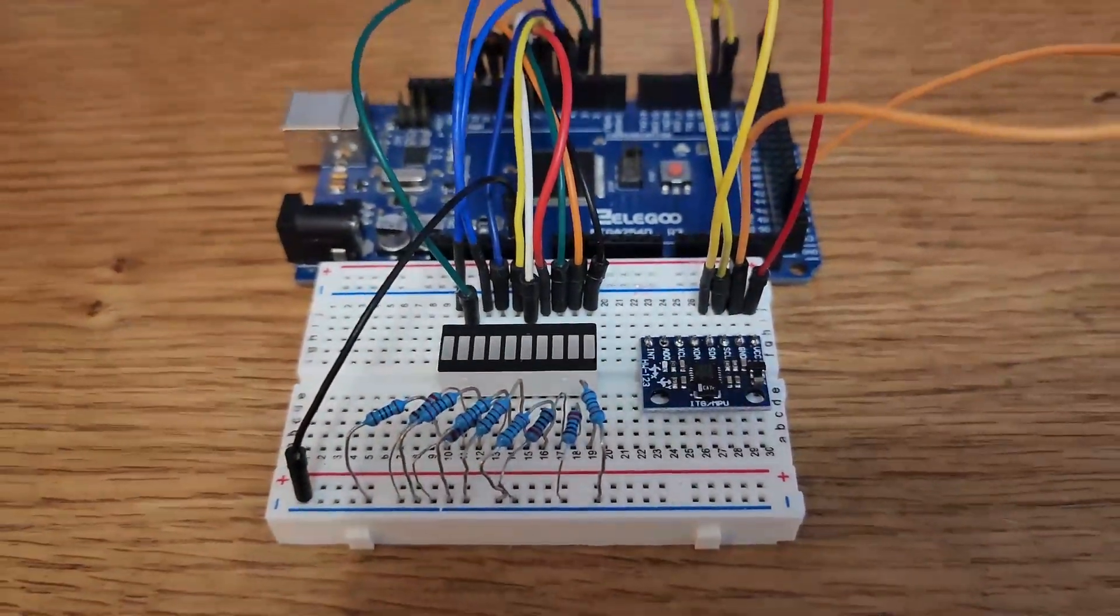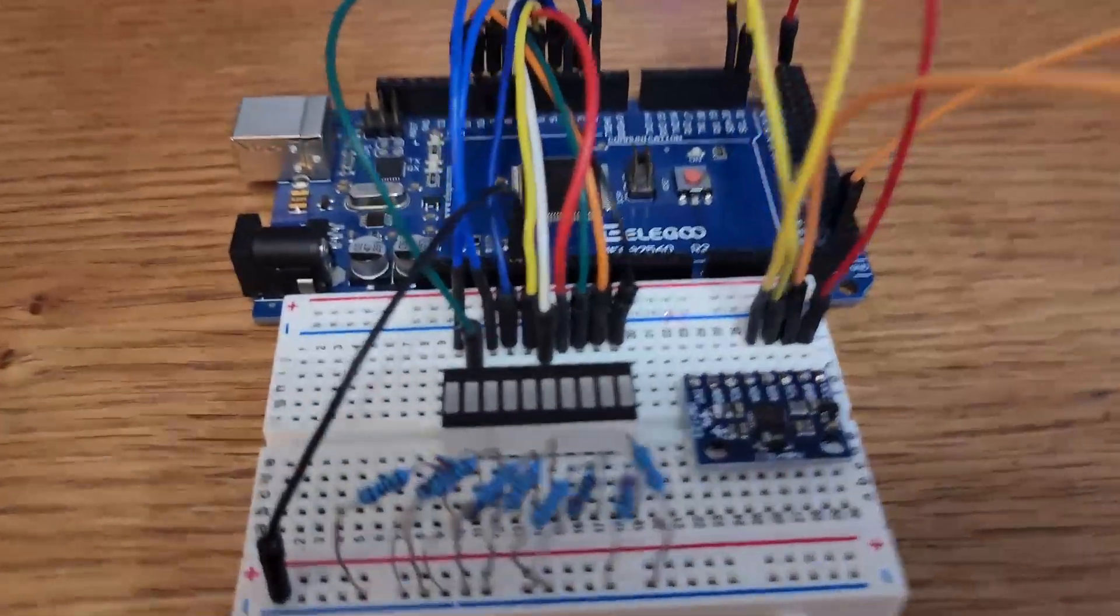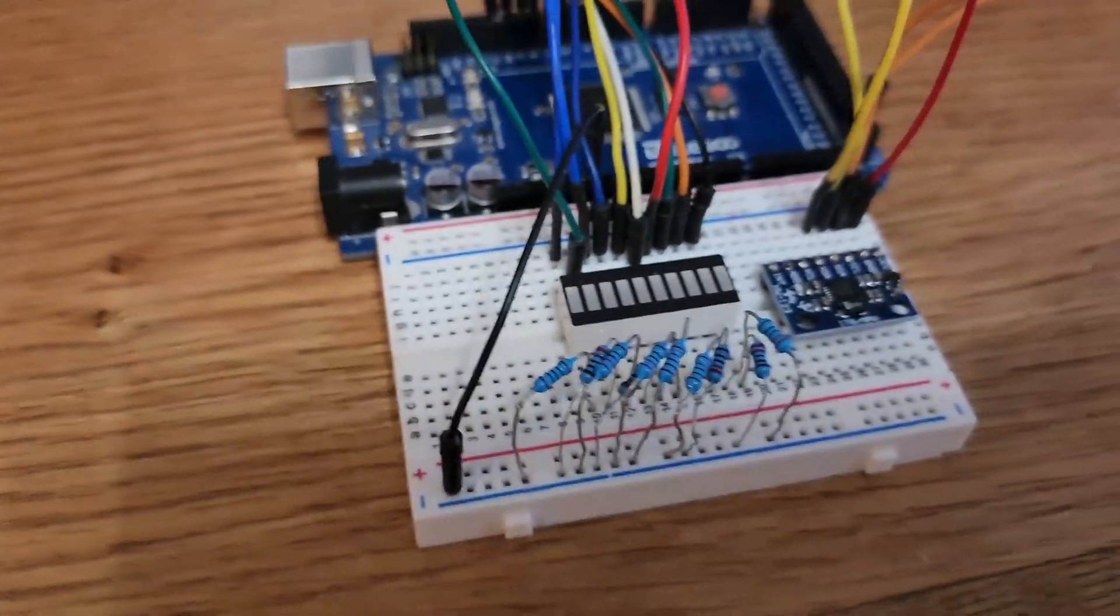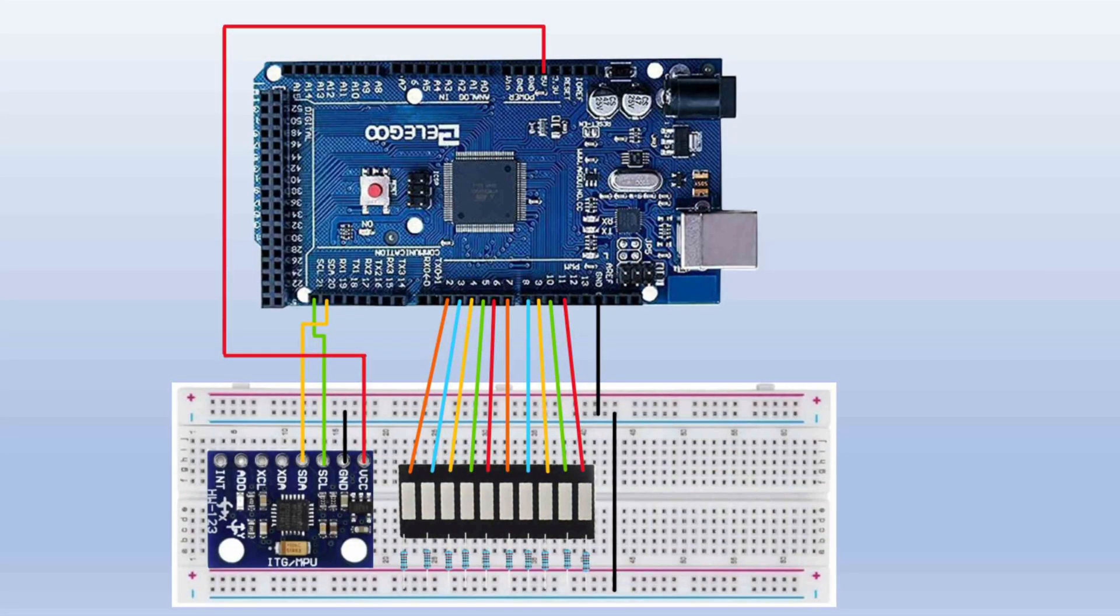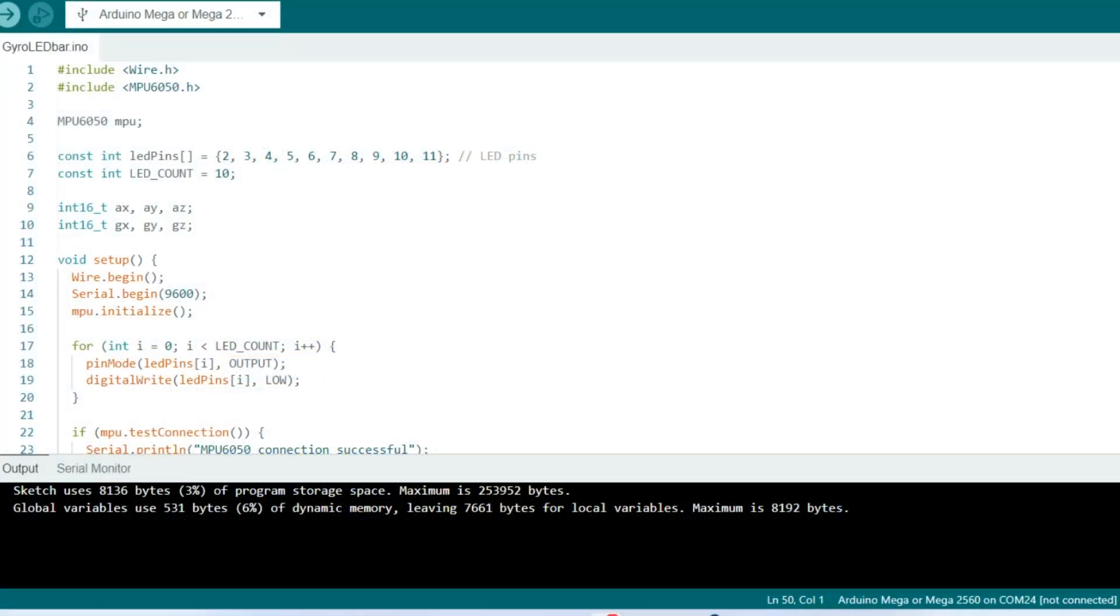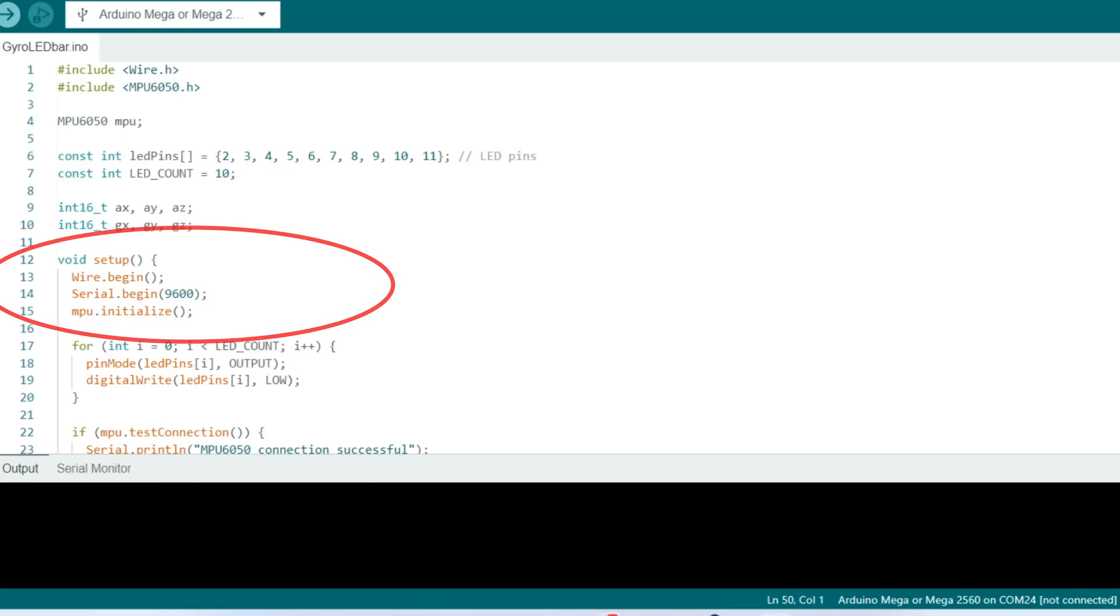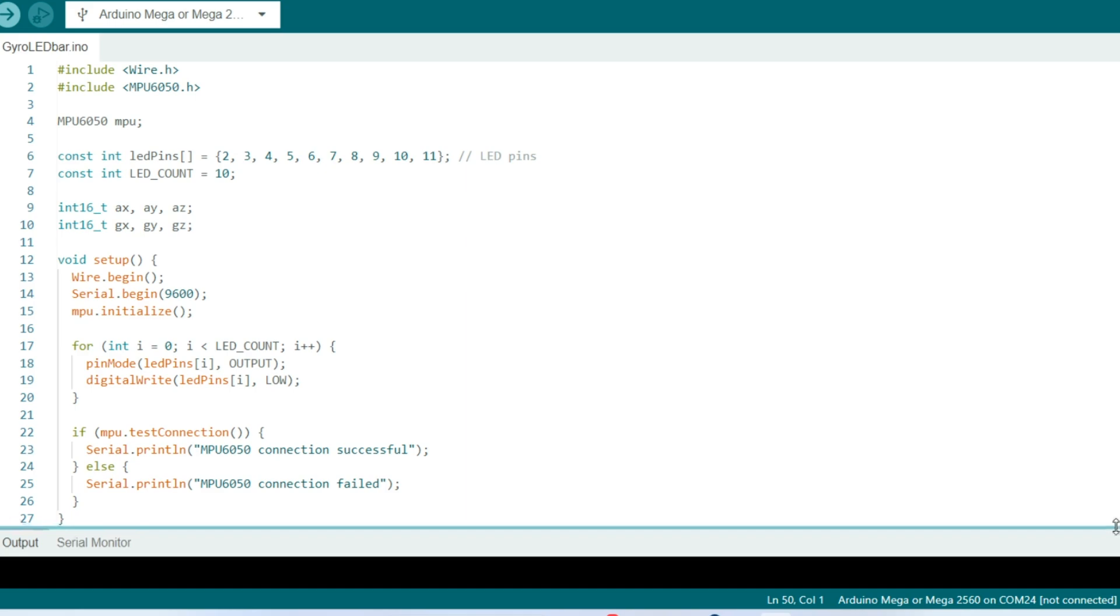Our final code reads tilt data from our gyroscope sensor and displays it on a bar graph made of LEDs. The number of LEDs lit corresponds to the tilt angle, providing a visual indication of the sensor's orientation. The setup function initializes I2C in serial communication. It also checks the connection to our MPU6050 gyrosensor we'll be using. It sets each LED pin as an output and turns them off initially.